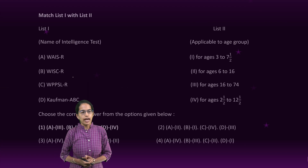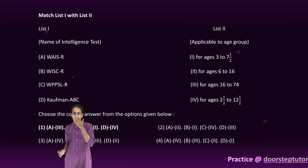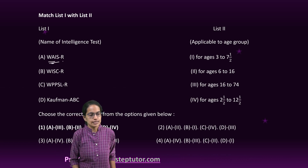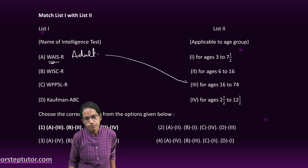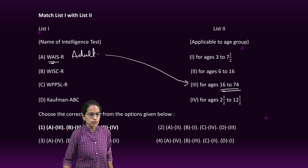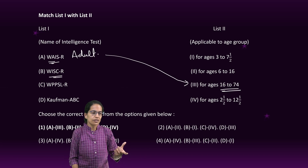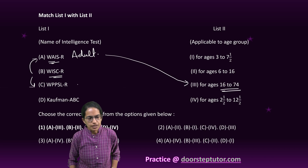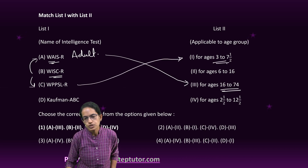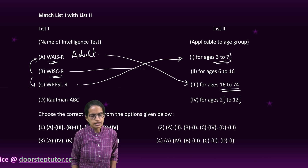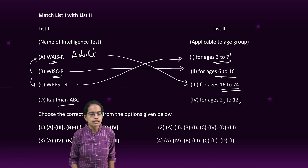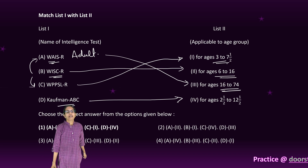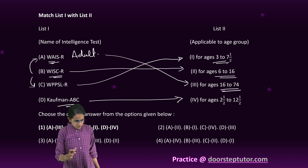The next question talks about intelligence tests and their application to various age groups. The first one is Weschler's Adult Intelligence Test — as the name says, it is applicable for the age group of 16 to 74 years. This is a suite of tests which includes the adult intelligence scale as well as the Primary and Preschool scale, which is for the age group of 3 to 7.5 years. The WISC is for the age group of 6 to 16 years, and Kaufman, as already discussed, is 2.5 to 12.5 years — those are the correct matches.